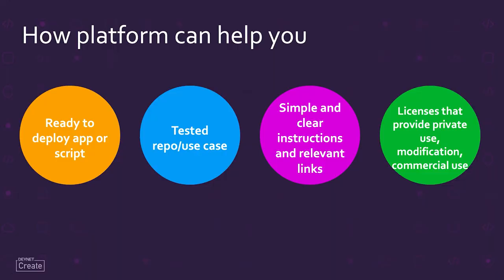Let me do a quick recap. There are four key points. Code and Automation Exchange is a platform with ready-to-deploy app scenarios. Before publishing a new project, we test all repos and use cases. All repos have simple and clear instructions and relevant links, plus licenses that provide privacy, modification, and commercial use. Automation and Code Exchange can help you promote your app or script and attract more contributors and users from the community.